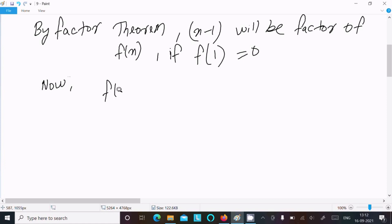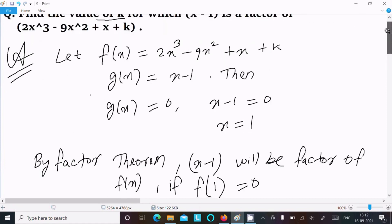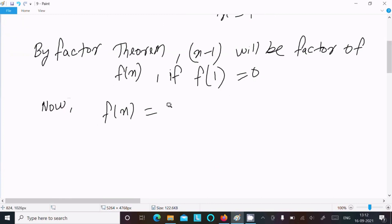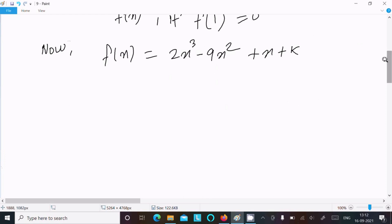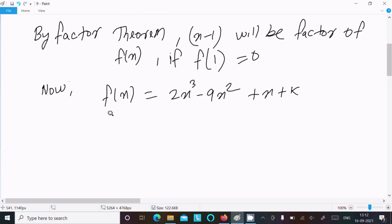So now here f(x) that going to write 2x cube minus 9x square plus x plus k. There, after putting the value 1, so 2 into 1 power cube minus 9 into 1 square plus 1 plus k.